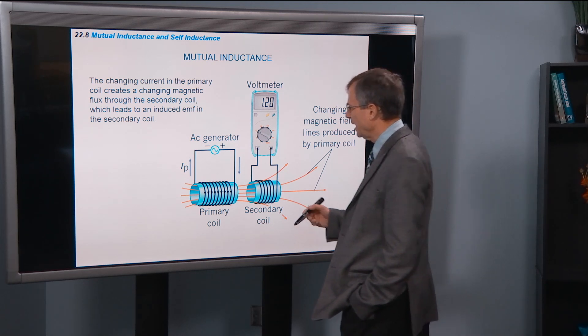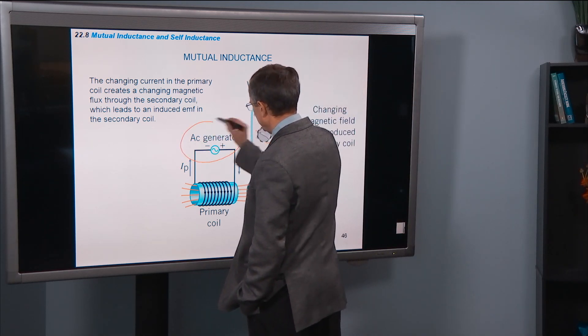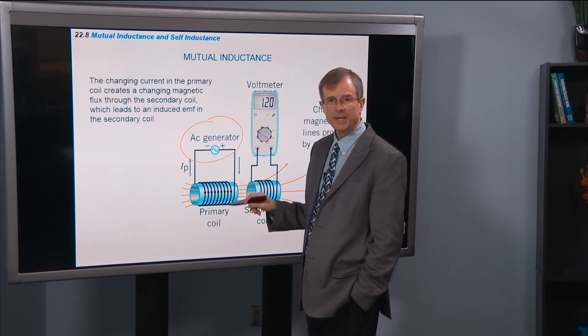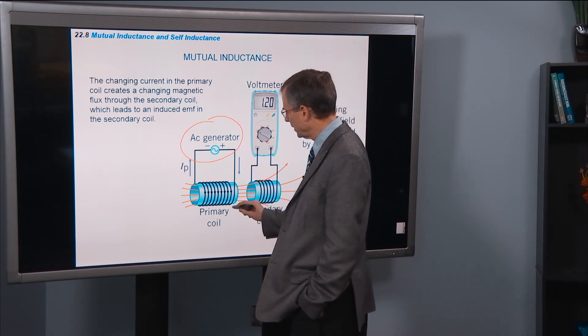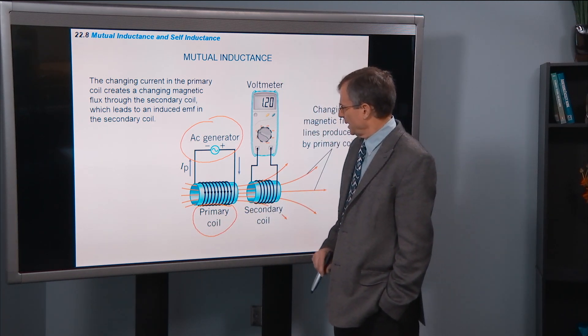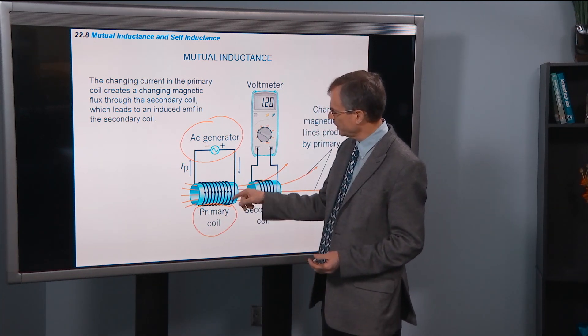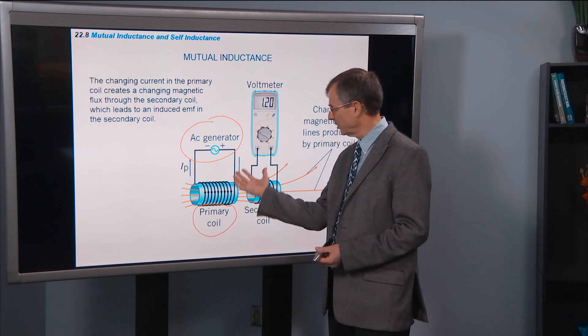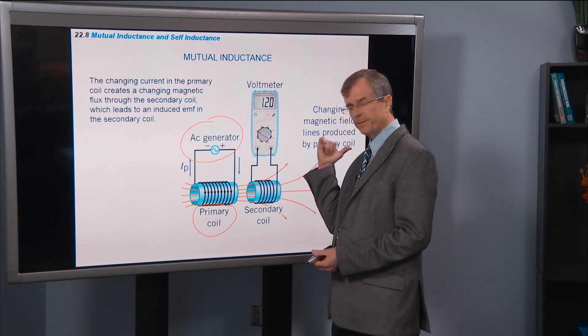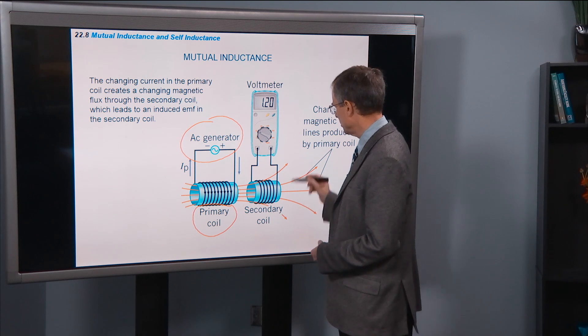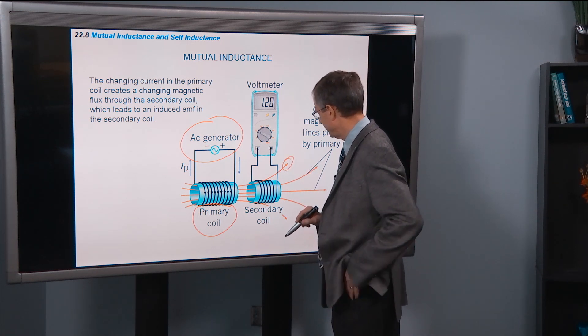Mutual inductance. Let's say we have an AC generator that's putting current in a solenoid. We call that the primary coil. When the current is in the direction shown by the black arrows, the magnetic field, using the right-hand rule, will be to the right like this, as shown in the red arrows. That's the magnetic field.